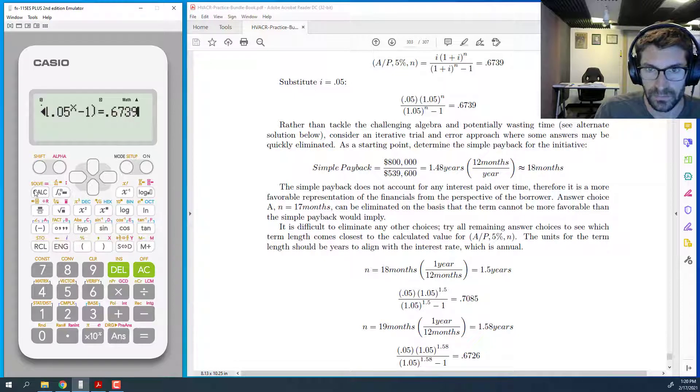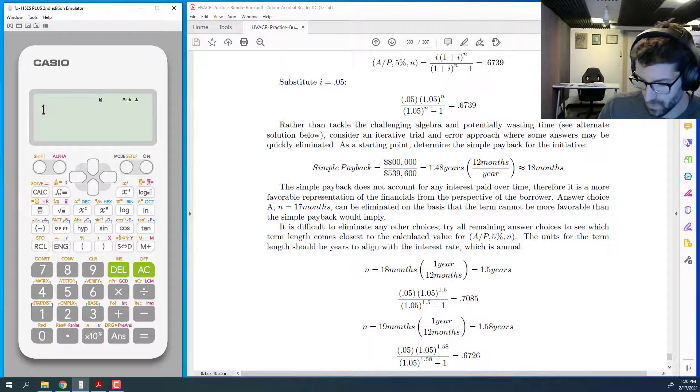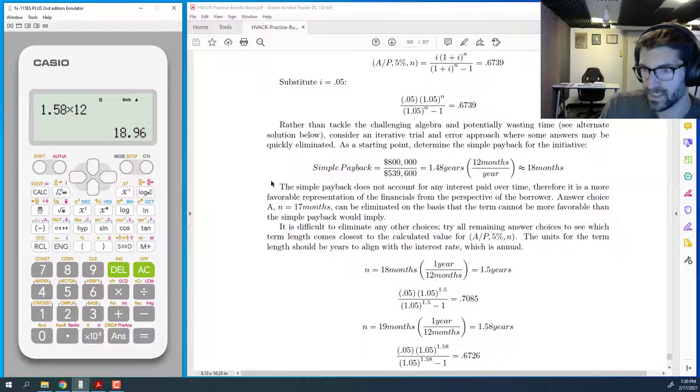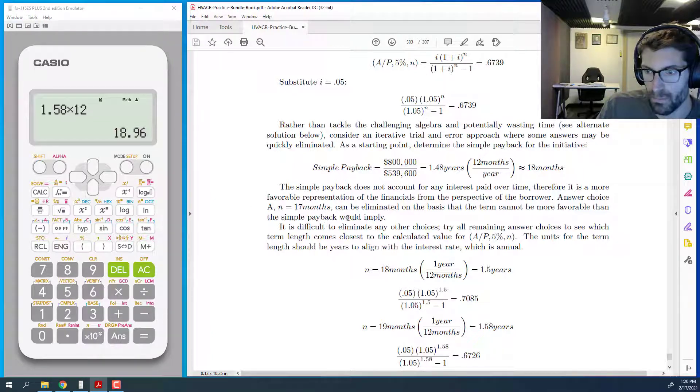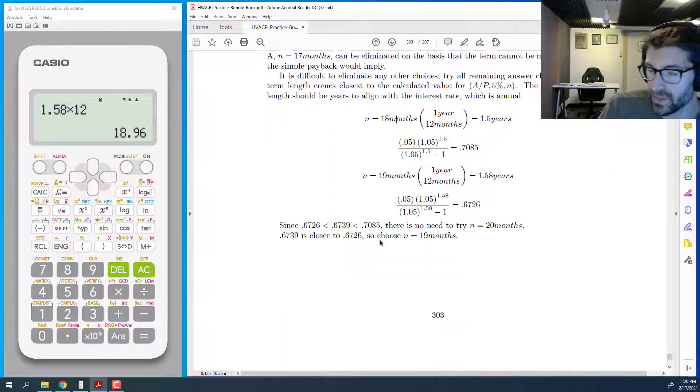Then we do shift solve. Hit equals. And we get 1.58, which is not the answer because that is the number of years. So we got to do 1.58 times 12 months per year. 1.58 times 12 is, this is giving me a fractional equivalent, but we can make that a decimal number, 18.96, which rounds to 19 months, which is the answer.